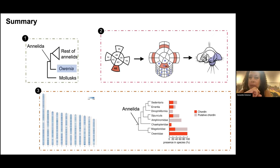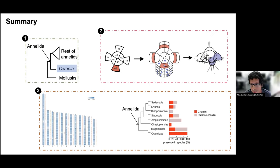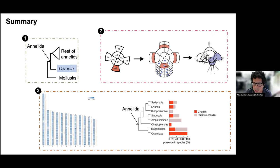We have a question from Bradley Davidson, who asks: did your analysis of the Owenia transcriptome reveal any other changes in our understanding of what signaling pathway components or transcription factors are ancestral to spiralia? Right now chordin was the biggest surprise, so we focused on that, and that led us to look at the transcriptomes of the rest of the annelids. The lab in general is working on comparative genomics of a lot of annelids, including deep-sea ones — some colleagues have found losses of important mechanisms happening in deep-sea annelids. But in Owenia per se, everything seems to be very complete, which is great for us.